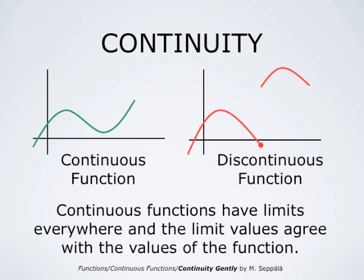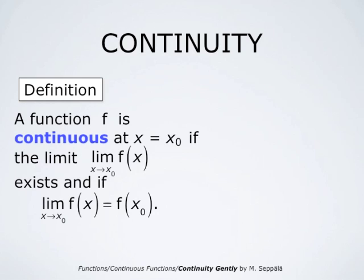The definition of continuity in terms of being able to draw the graph without lifting the pen is not very precise. A mathematical way of defining continuity is that continuous functions have limits everywhere, and the limit values agree with the values of the function. More precisely, we may speak about continuity at a point. We say that a function f is continuous at the point x equals x₀ if the limit of f(x) as x approaches x₀ exists and agrees with the value of the function at that point.